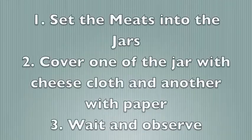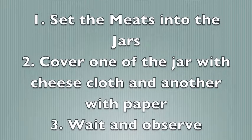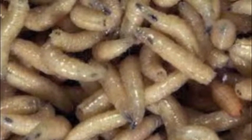First of all, set the meat into the jar, then cover with paper, and wait and observe the experiment while it is running. The cheesecloth in the open jar will be infected, while the other jar will be empty and there will be no maggots.